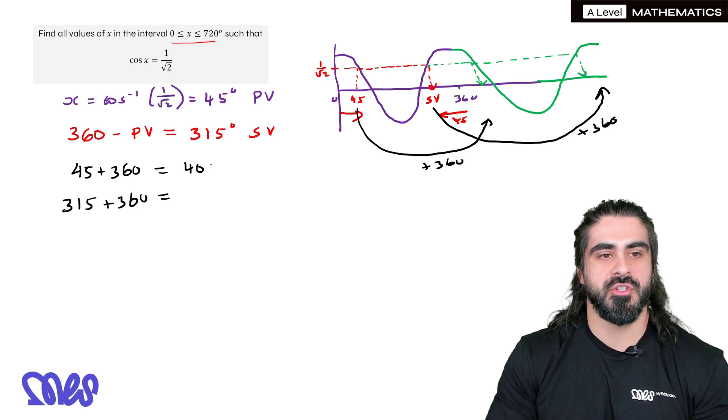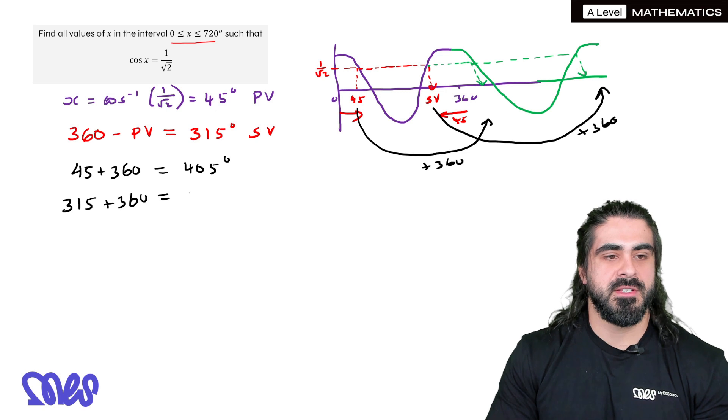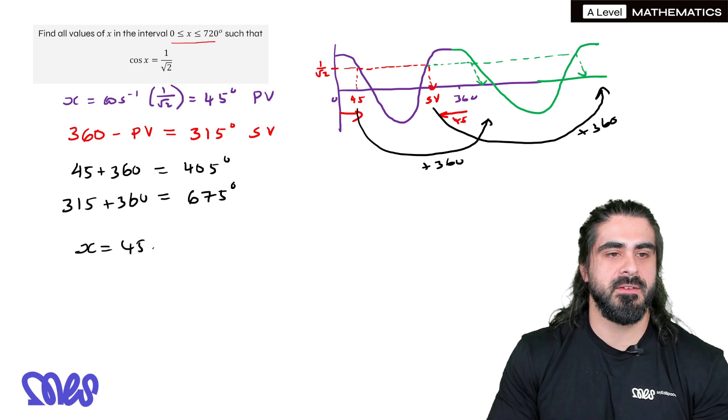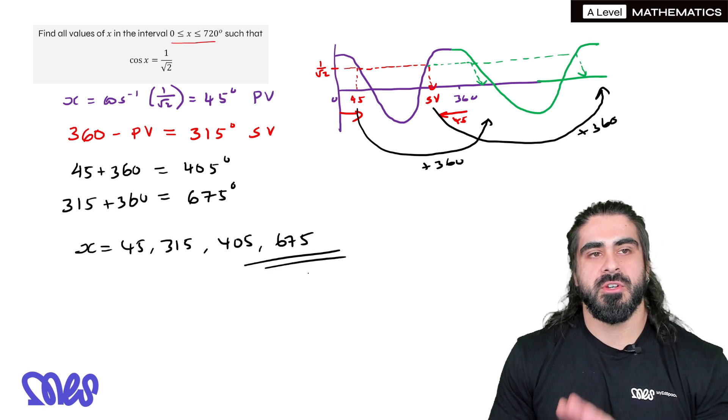So you just have to pay attention to the range to find the primary and secondary value is the same every single time. Then once you've found those, you check the range and you say, okay, well, we can find more values here by adding 360 to both the primary and the secondary value. 45 plus 360 is 405. And 315 plus 360 is 675. So there's actually four solutions here. 45, 315, 405, 675.